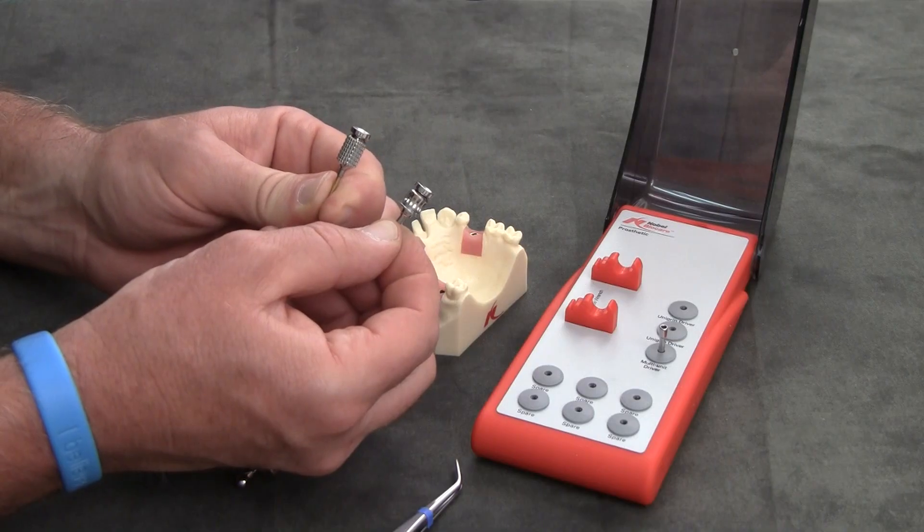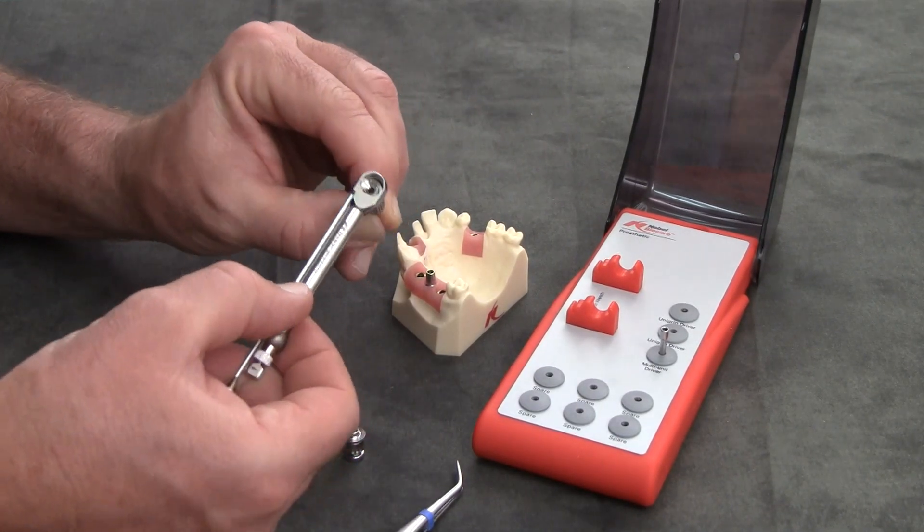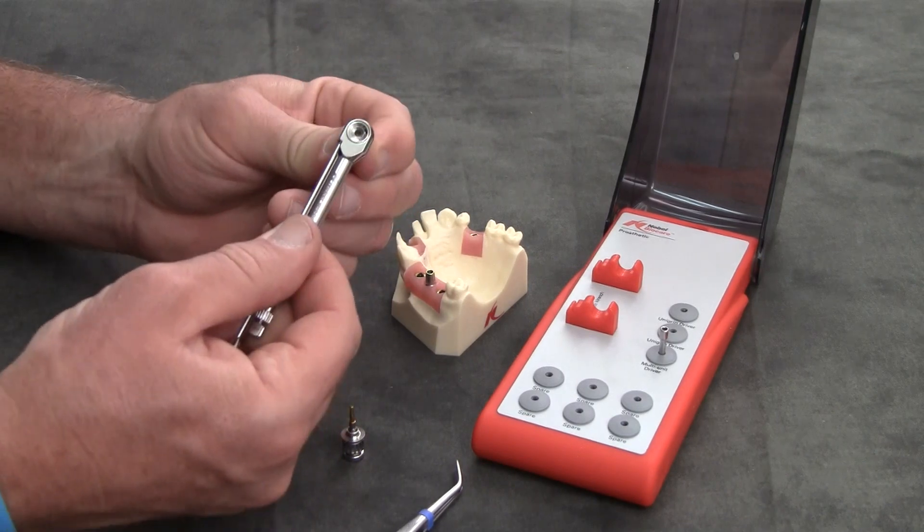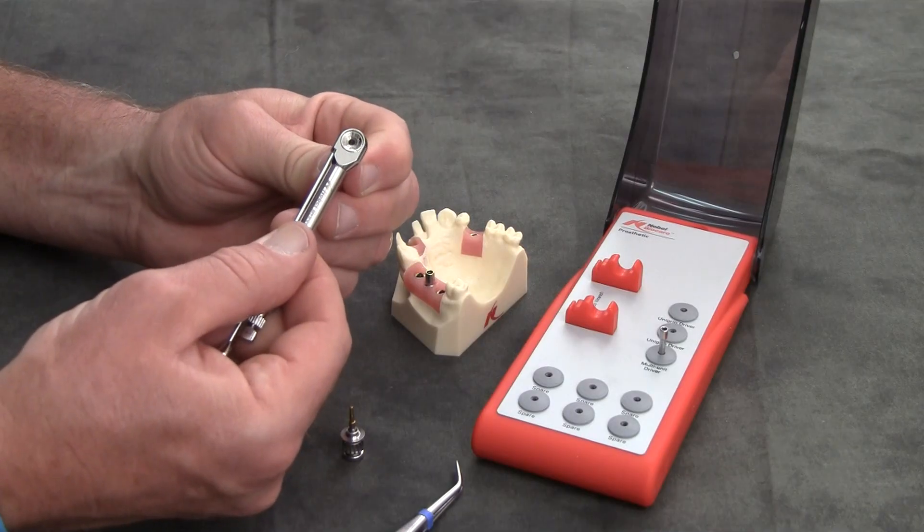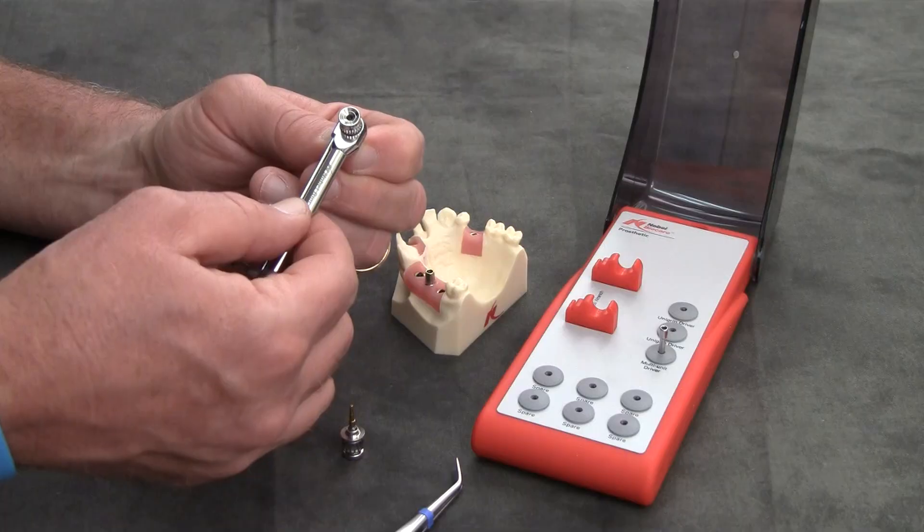But if you try and utilize this manual wrench in the torque wrench, you'll find that it simply slips and won't properly engage. There's no stop, and you can barely hear a little ratcheting, but it will not engage completely.